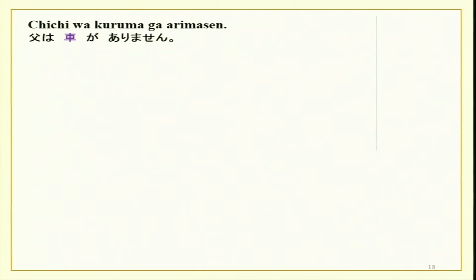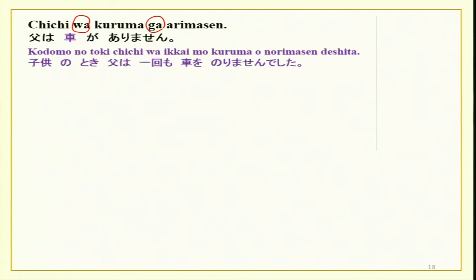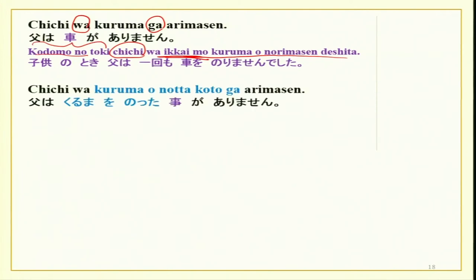Otosan wa takai kuruma ga arimasu — he has an expensive car. Otosan wa kuruma wo norimashita. Otosan wa kuruma wo notta koto ga arimasu — otosan has had the opportunity of using a car. Notta is from noru — noru means to ride. Chichi wa kuruma ga arimasen — he does not have a car. Kodomo no toki, chichi wa ikkai mo kuruma wo norimasen deshita — when he was a child he never had the opportunity of going in a car, not even once. Chichi wa kuruma wo notta koto ga arimasen — he has never travelled by car.